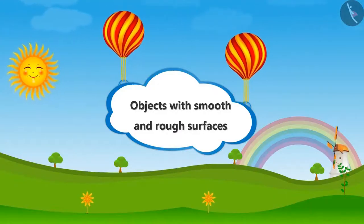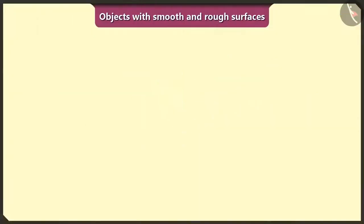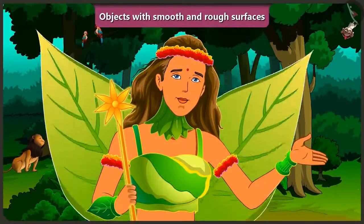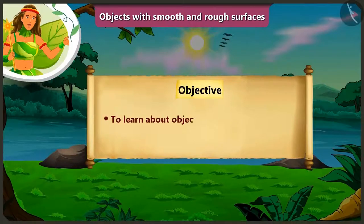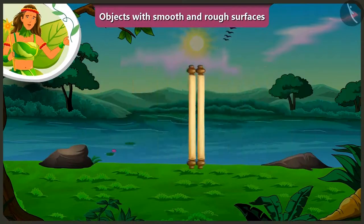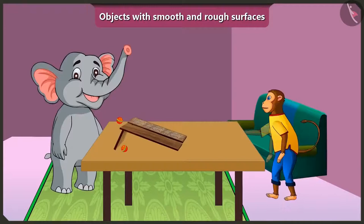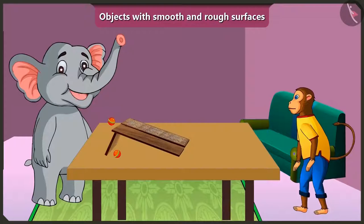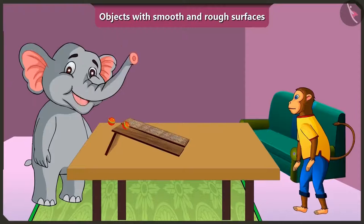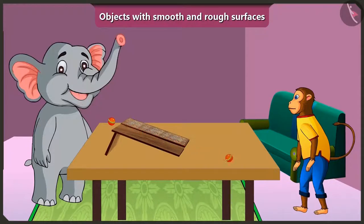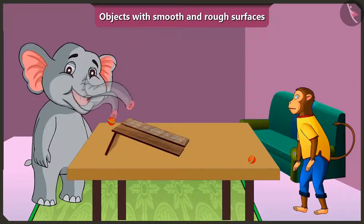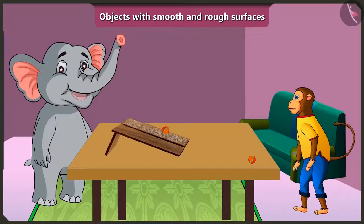Objects with smooth and rough surfaces. Friends, today we will learn about things around us with smooth or rough surfaces. Hey Appu, what are you doing? I have two similar balls. When I roll them, the ball rolls down faster on this wooden slope, but rolls down slowly on this other slope. Why is it so, Jaggu?